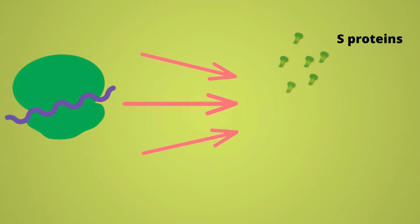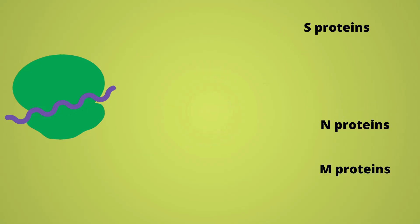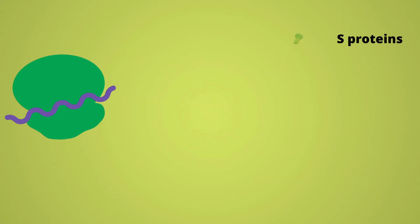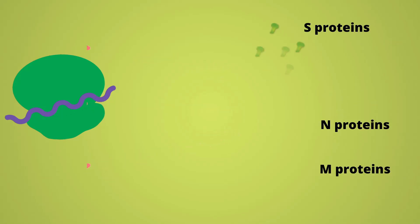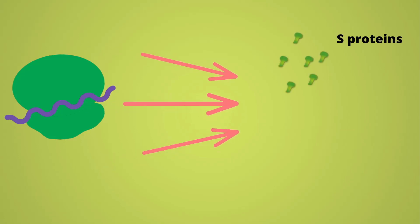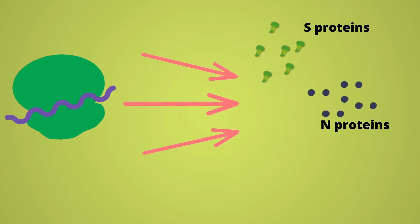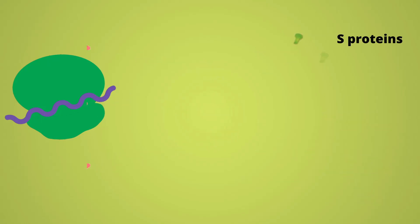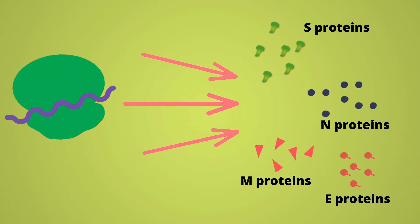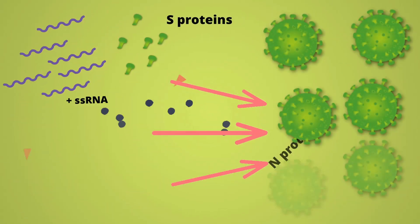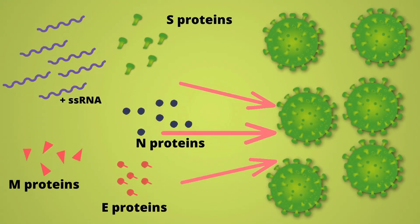The viral RNA polymerase then uses the negative single-stranded RNA to make more positive-sense single-stranded RNA. The cell's ribosomes translate the viral RNA into polypeptides that are combined to form the virus's structural proteins: S proteins (spike proteins), N proteins (nucleoproteins that bind new RNA), and M and E proteins embedded in the lipid bilayer envelope. All these proteins, together with newly copied RNA, are assembled into new coronavirus particles within the type 2 pneumocyte.